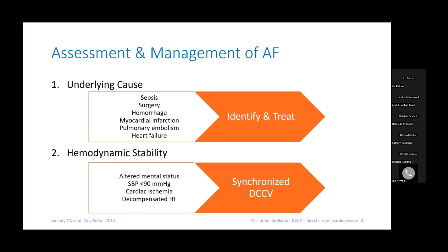The main thing we want to do initially is identify and treat these causes. If a patient who is in AFib becomes hemodynamically unstable — which would be altered mental status, a drop in blood pressure, or some type of cardiac ischemia or decompensation in heart failure symptoms — we should be considering a synchronized electrical cardioversion for these patients.